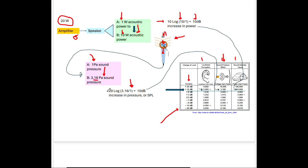A 3.16 times increase in pressure also amounts to a 10 dB gain. That's because decibels always refers to power, whereas pressure is not power — and voltage is not power. So if we're measuring things that are not power-related, we've got to multiply by 20, not 10. That's a trick of mathematics: power is V² / R — there's a square there that comes down and multiplies that 10 by 2 to make it 20. So everything is being perfectly consistent.